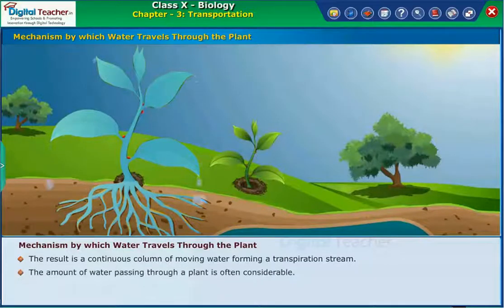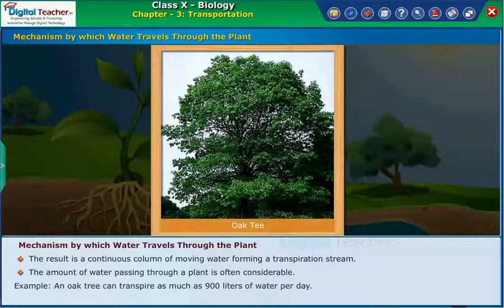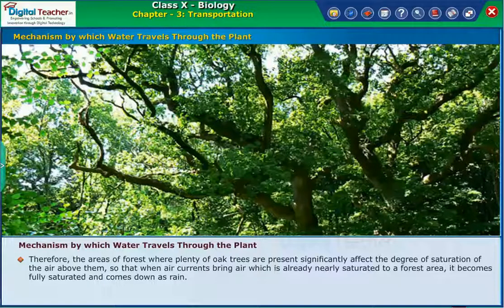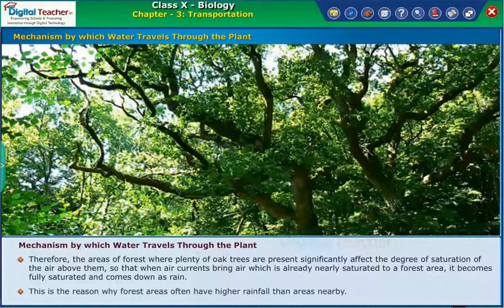The result is a continuous column of moving water called a transpiration stream. The amount of water passing through a plant is often considerable. For example, an oak tree can transpire as much as 900 liters of water per day. Therefore, areas of forest where plenty of oak trees are present significantly affect the degree of saturation of the air above them, so that when air currents bring air that is already nearly saturated to a forest area, it becomes fully saturated and falls as rain. This is the reason why forest areas often have higher rainfall than nearby areas.